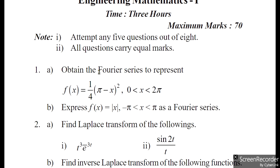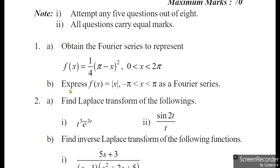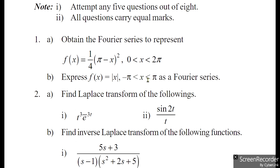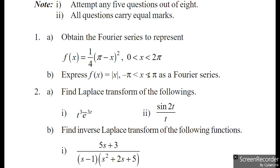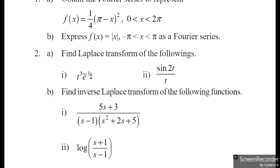First question, part A: Obtain the Fourier series to represent f(x) = 1/4(π - x)², 0 < x < 2π. Part B: Express f(x) = |x|, -π < x < π as a Fourier series.